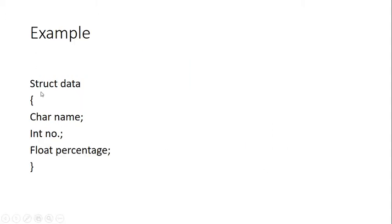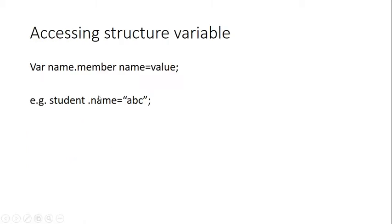For example, suppose the name of my structure is 'data'. I write 'struct data' and inside that I declare three members with different data types: character, integer, and float. So I declare: char name, int number, float percentage. In the structure 'data' you can define a collection of different data types.